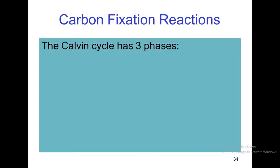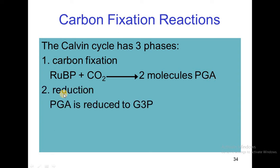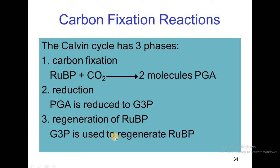The Calvin cycle has 3 phases. The first phase is carbon fixation, in which ribulose bisphosphate reacts with carbon dioxide to produce 2 molecules of phosphoglycerate. The second phase is reduction, in which phosphoglycerate is reduced to glyceraldehyde 3-phosphate. The third phase is the regeneration of ribulose bisphosphate, in which glyceraldehyde 3-phosphate is used to regenerate ribulose bisphosphate.